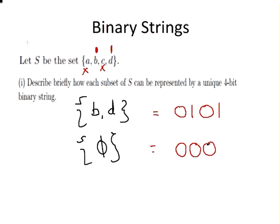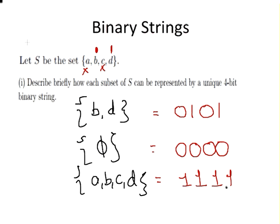And let's just look at another case: {a, b, c, d}. In this case each element is present, so for each case there is a corresponding 1. So in this case it would be 1111. So that's straightforward enough.